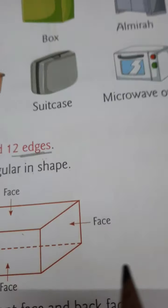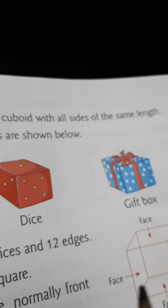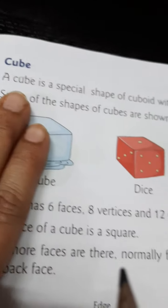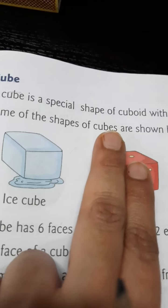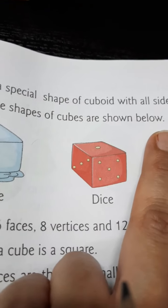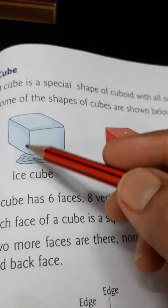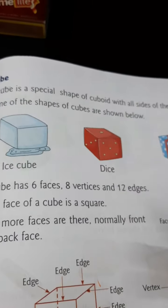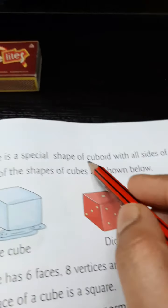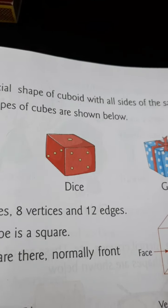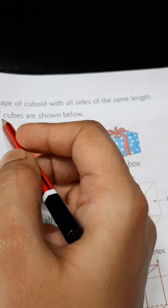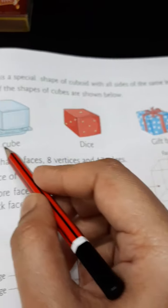Now let us come to another shape — that is cube. A cube is a special shape of cuboid, but the only difference is that the face of a cube is square in shape. So it is a special cuboid with all sides of the same length.